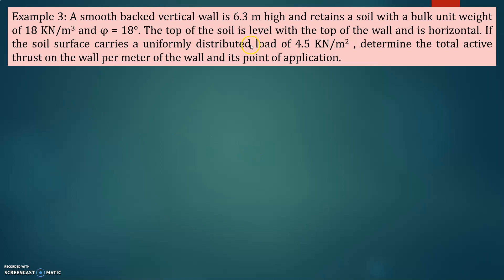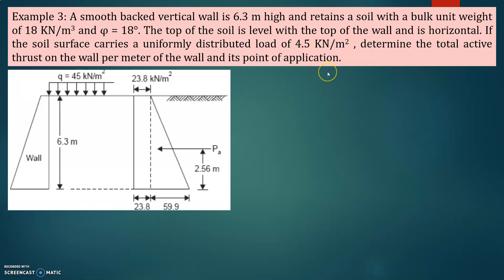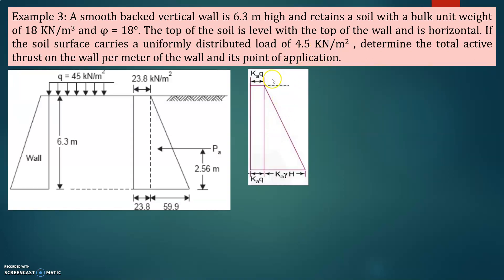It is given that it is a smooth vertical wall with a bulk unit weight of 18 kilonewton per meter cube and phi equal to 18 degrees. The top of the wall is horizontal, but the soil surface carries a uniformly distributed load of 4.5 kilonewton per meter square — meaning there is a surcharge load. For the pressure distribution diagram with a surcharge: this portion is Ka times Q due to surcharge, and this portion is Ka times gamma times H due to the soil.